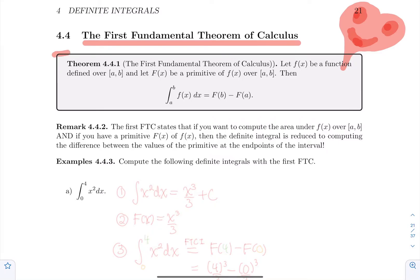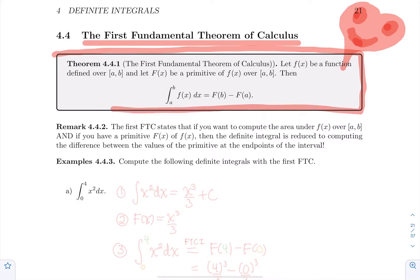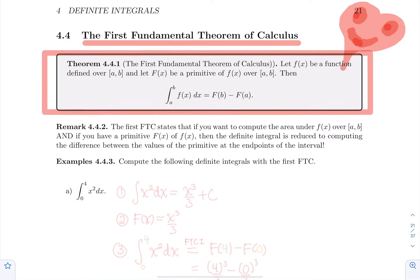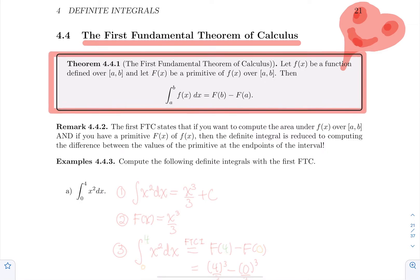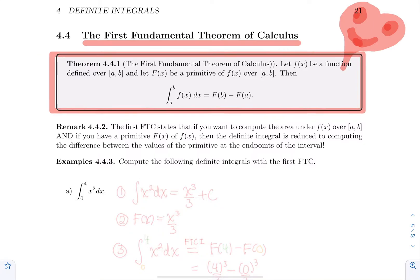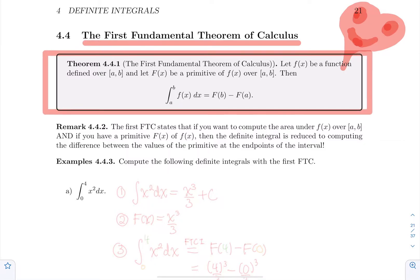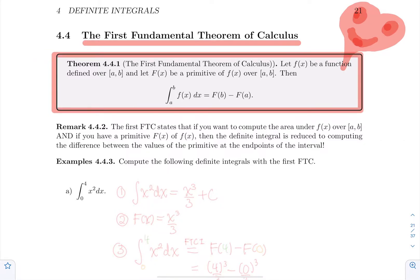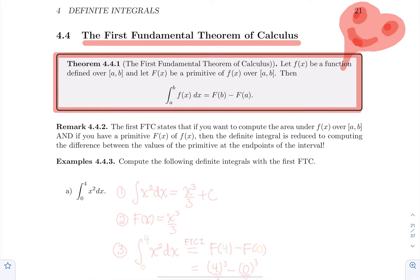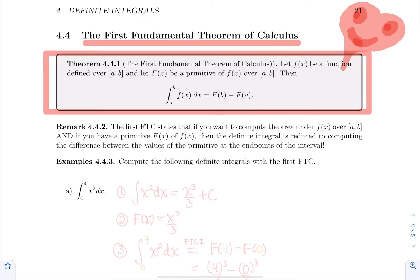So here it is. Suppose we have a function defined over [a, b], and suppose that big F is a primitive for that function over that interval [a, b]. Then the definite integral of f(x) over the interval [a, b], or the integral from a to b of f(x) dx, is the value of big F at b minus the value of big F at a.